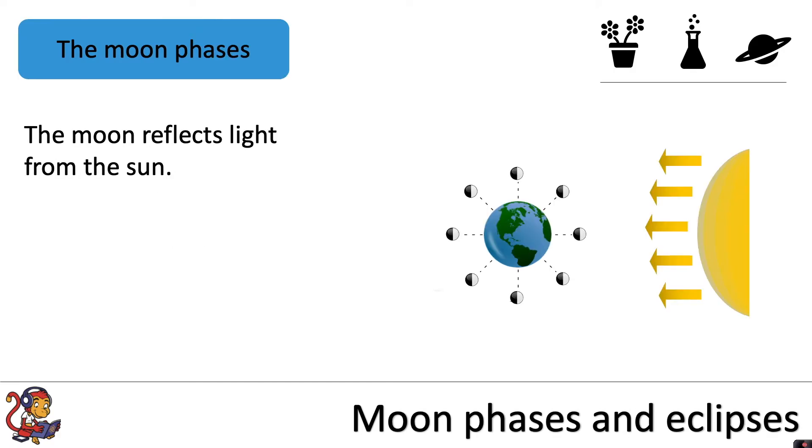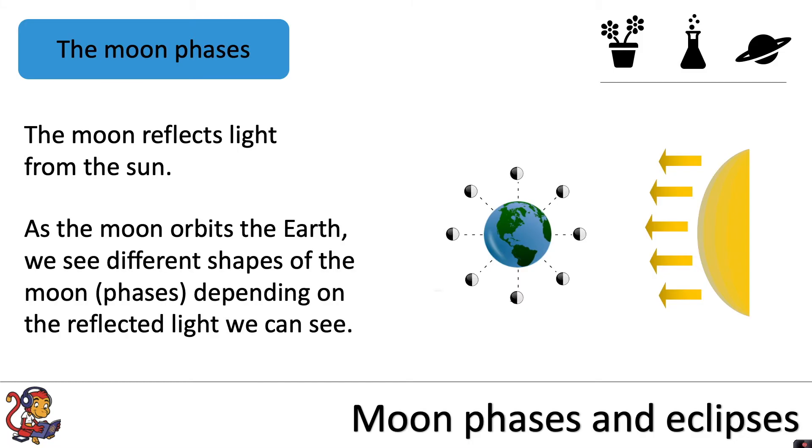The Moon reflects light from the Sun. As the Moon orbits the Earth we see different shapes of the Moon called phases depending on the reflected light we can see.